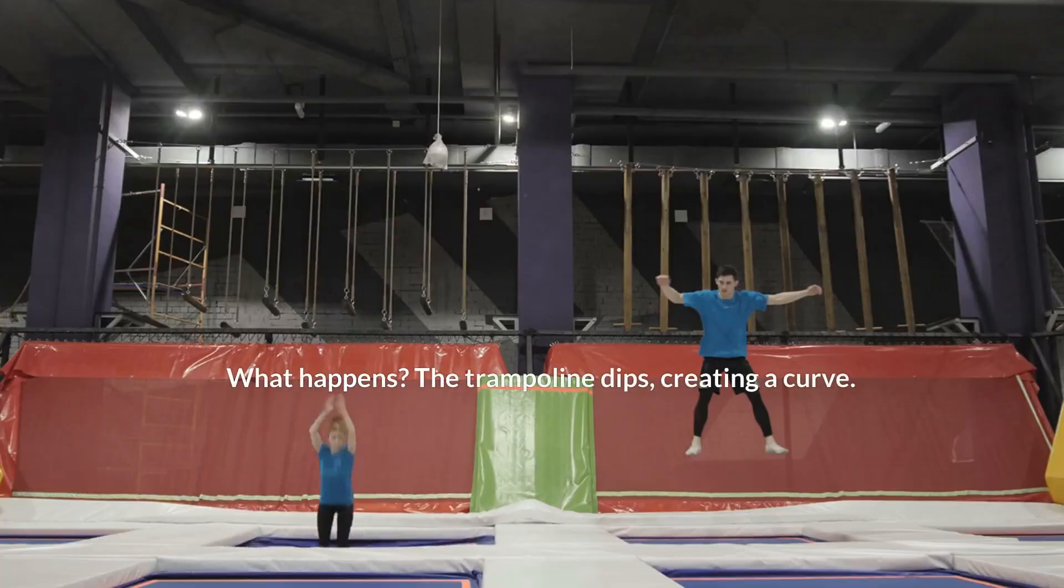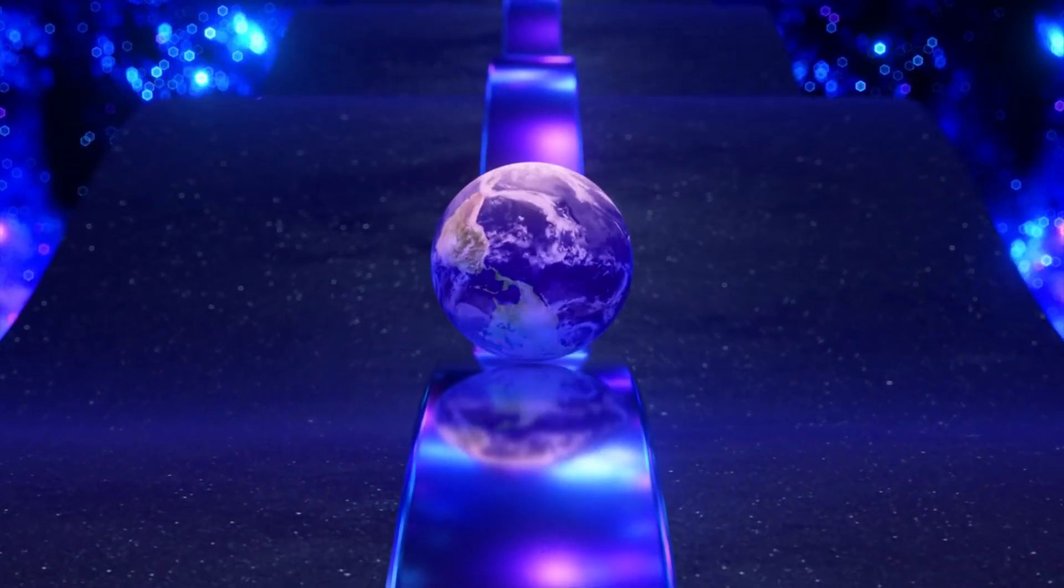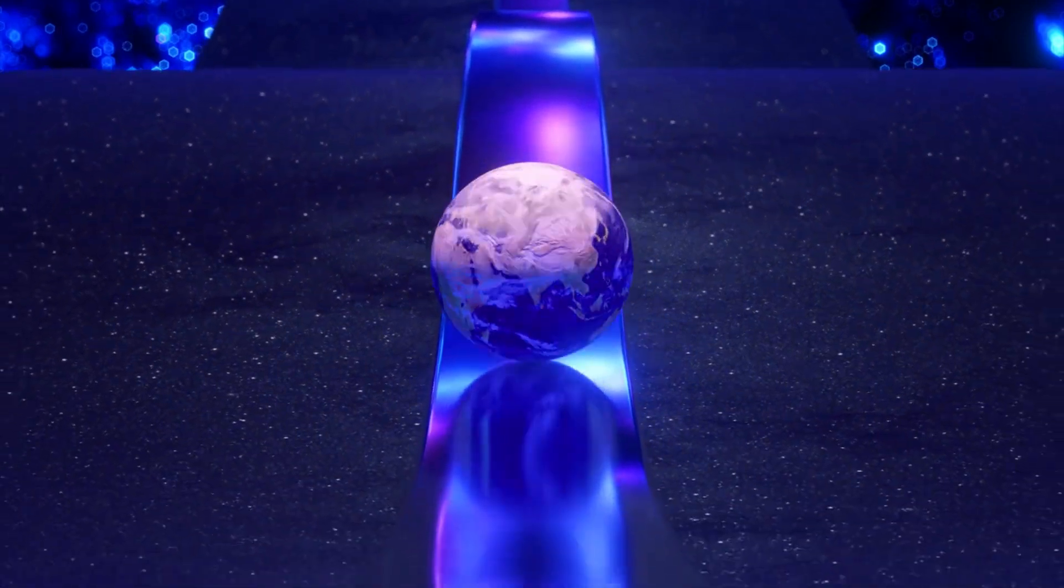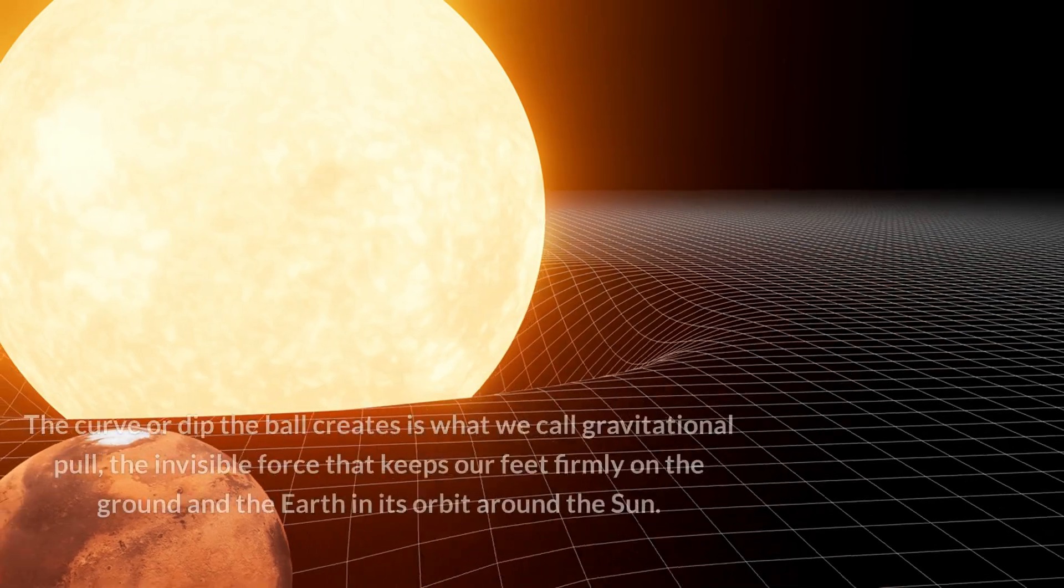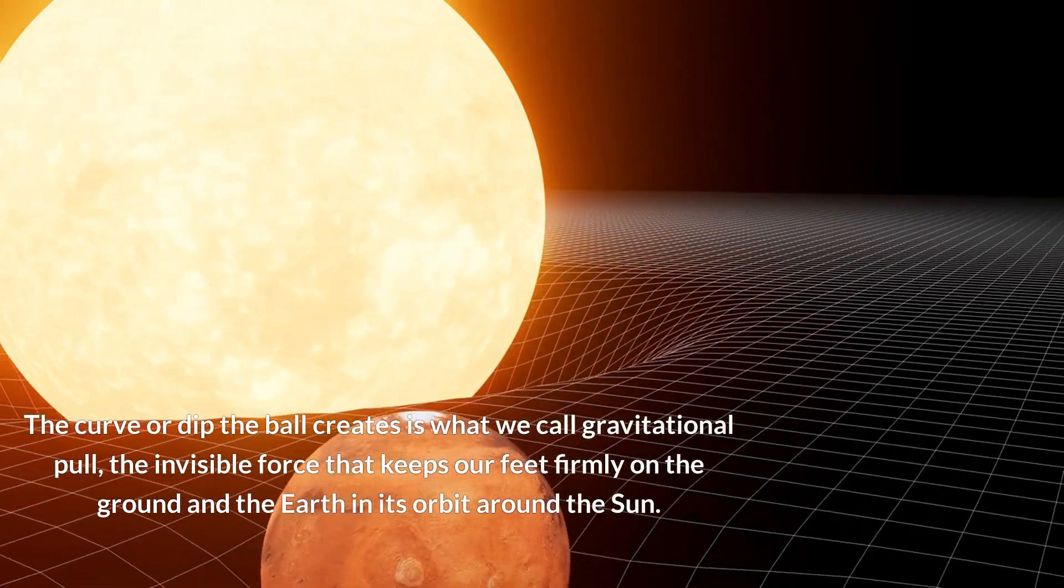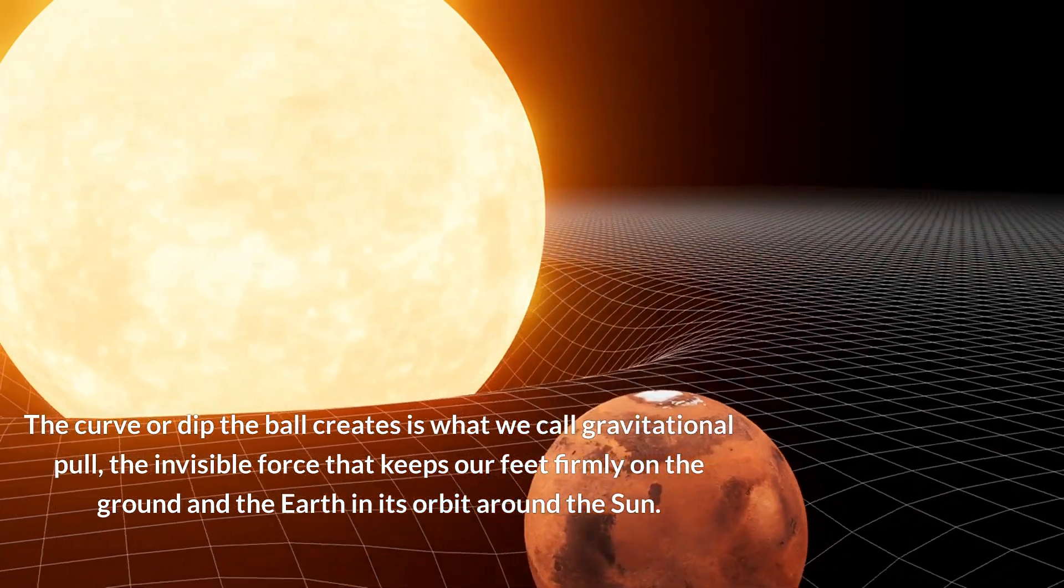What happens? The trampoline dips, creating a curve. This is gravity in action. The bowling ball represents a massive object like a planet or star, and the trampoline represents the fabric of space-time. The curve the ball creates is what we call gravitational pull, the invisible force that keeps our feet on the ground and Earth in orbit around the sun.